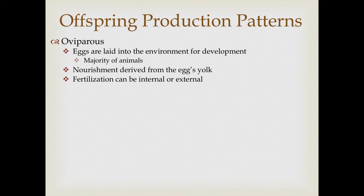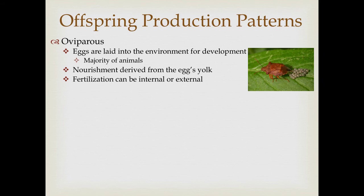As we go through different animal lineages, we'll see different patterns of offspring production. The most common pattern is oviparous — where females produce eggs shed into the environment for development. 'Ova' refers to egg and 'paris' refers to birth, so it's basically giving birth to eggs directly into the environment. The young typically survive on their own, with nourishment derived from the egg's yolk. Fertilization can be internal or external. Think of a typical insect — the female laying eggs into the environment.